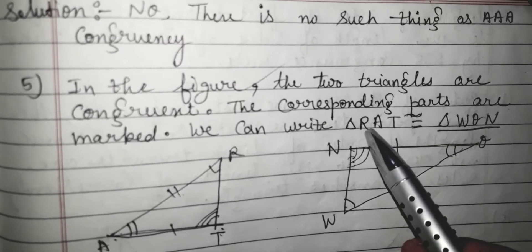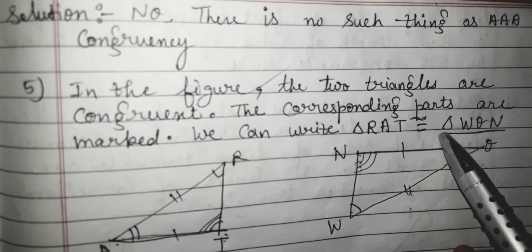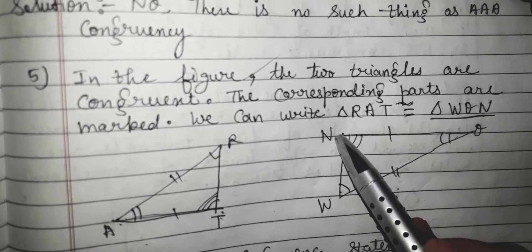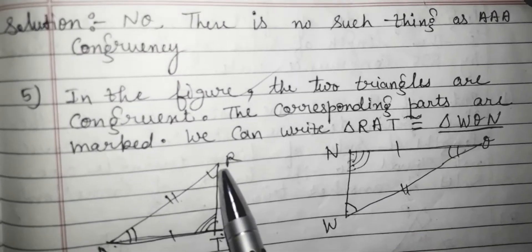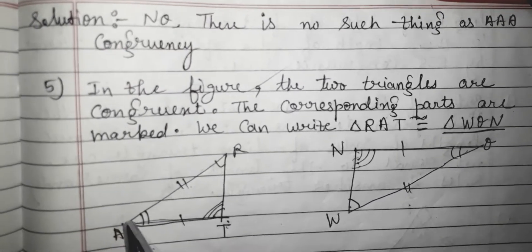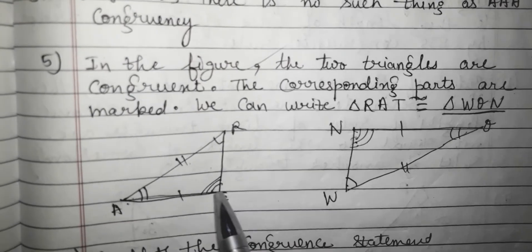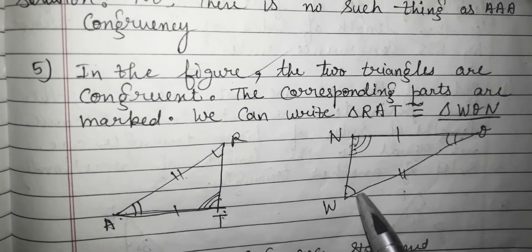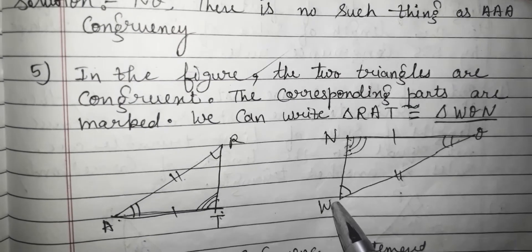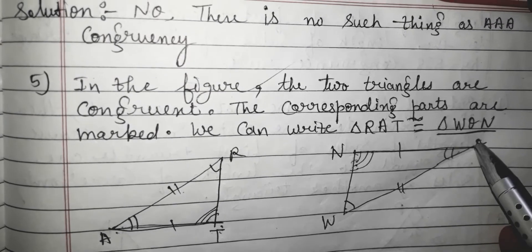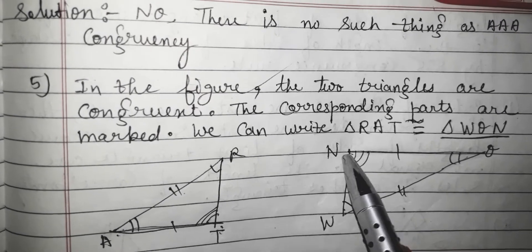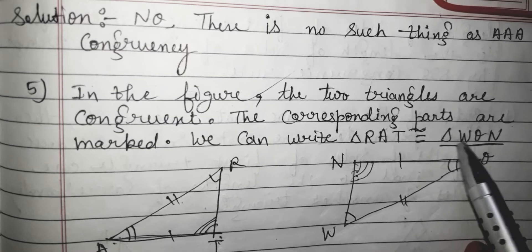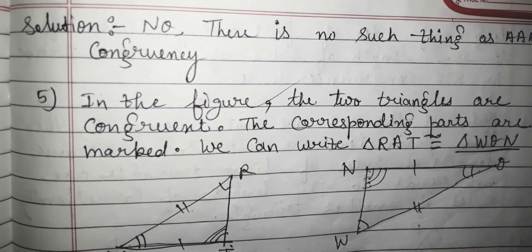So, triangle RAT is congruent to triangle WON. This is the right sequence because I am starting from angle 1 to angle 2, then going to angle 3. In the same way, in the second triangle, I go from W to O, then O to N. So, the answer is triangle WON.